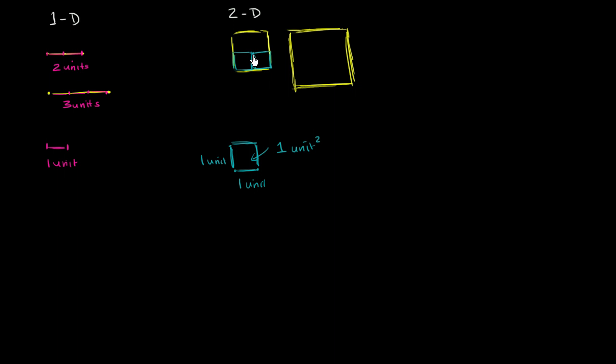Well, there. We'll put another unit square there. We'll put another unit square right over there. We'll put another unit square right over there. Wow, four unit squares exactly cover this. So we would say that this has an area of four square units, or four units squared.